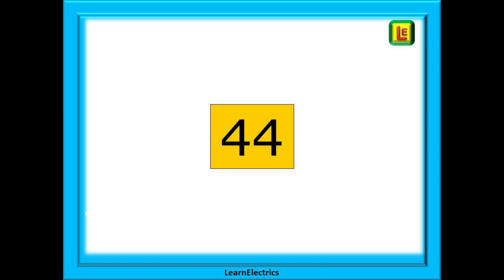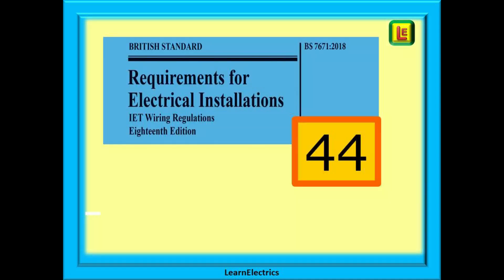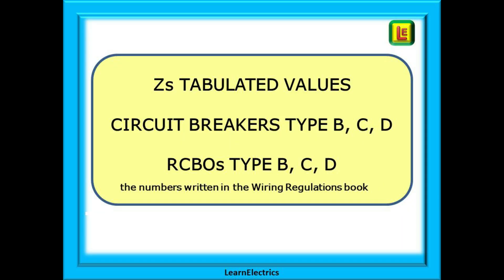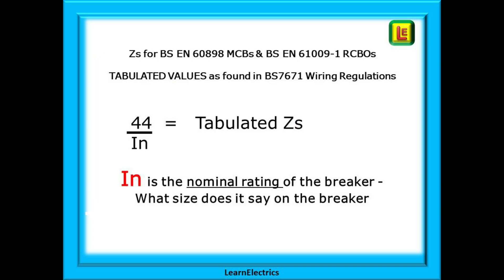Let's begin with the number 44. This number will give us the values that are to be found in the wiring regulations book without using the book. This method is so easy and so quick that you can have the number calculated before your colleagues have even found the right page in the regs book. We're going to start by calculating the ZS tabulated values. Tabulated means they come from a table within the regulations book, and we will look at type B, type C, and type D devices. You will learn how to calculate ZS for the common BS EN 60898 breakers and 61009 RCBOs — these are called tabulated values as found in the wiring regulations.